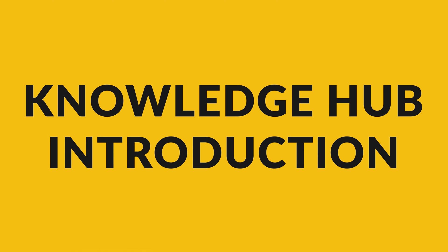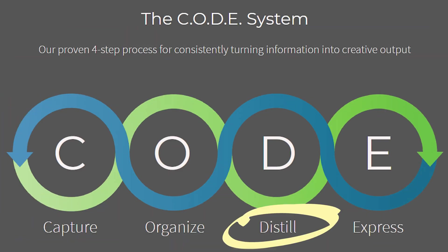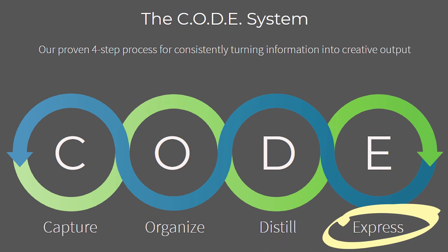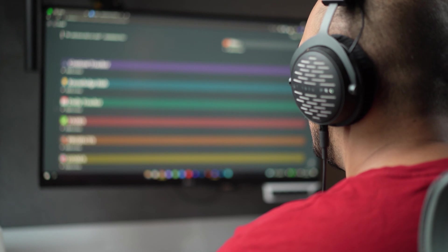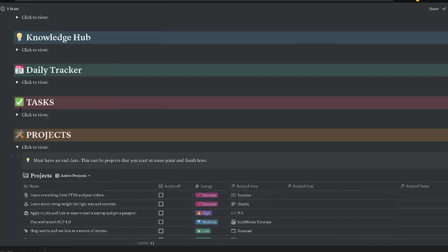The knowledge hub, or our second brain, is nothing more than a database where we can capture information, organize it the way we want, summarize or distill it, and then express it or create new stuff with it. I originally learned about the second brain concept through the Building a Second Brain course by Tiago Forte, and then I added this element on top of the system I created.